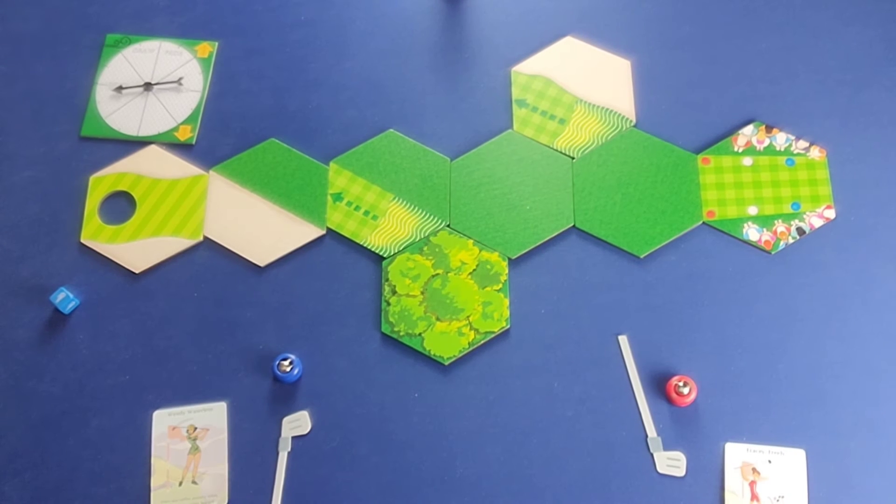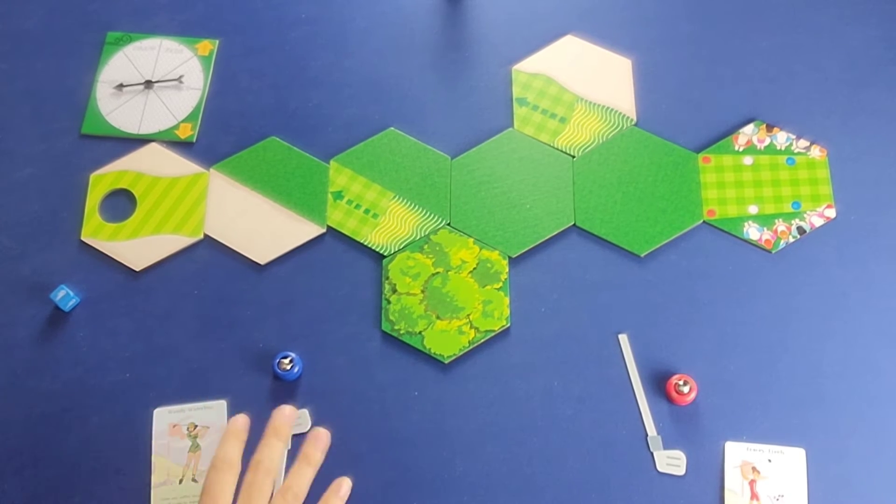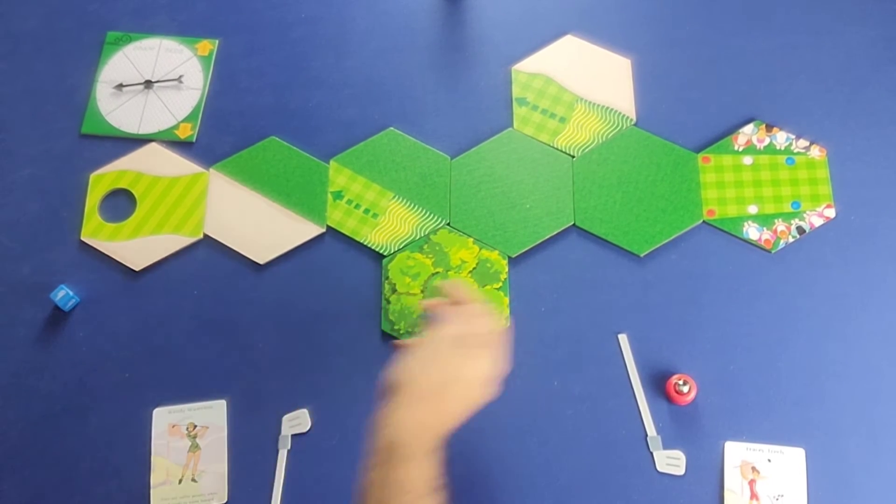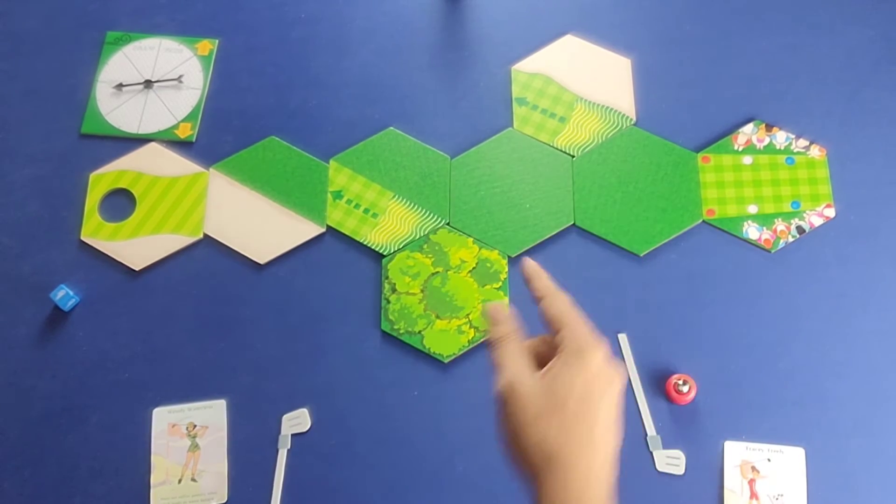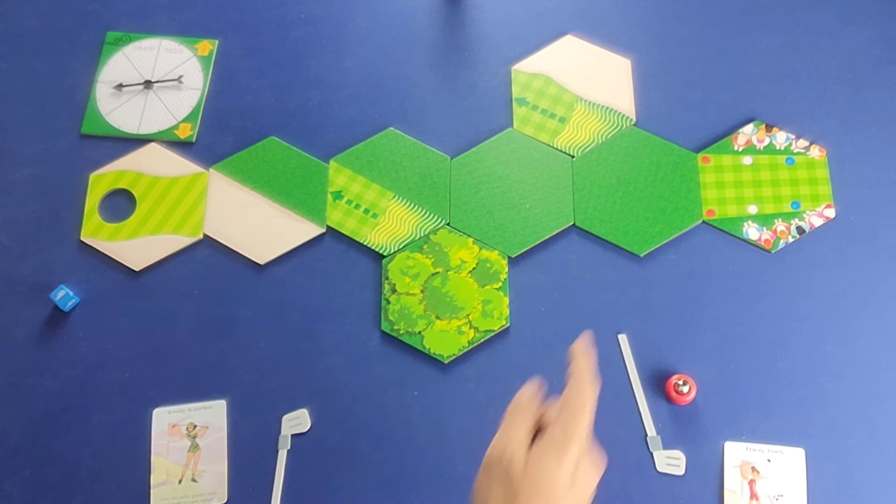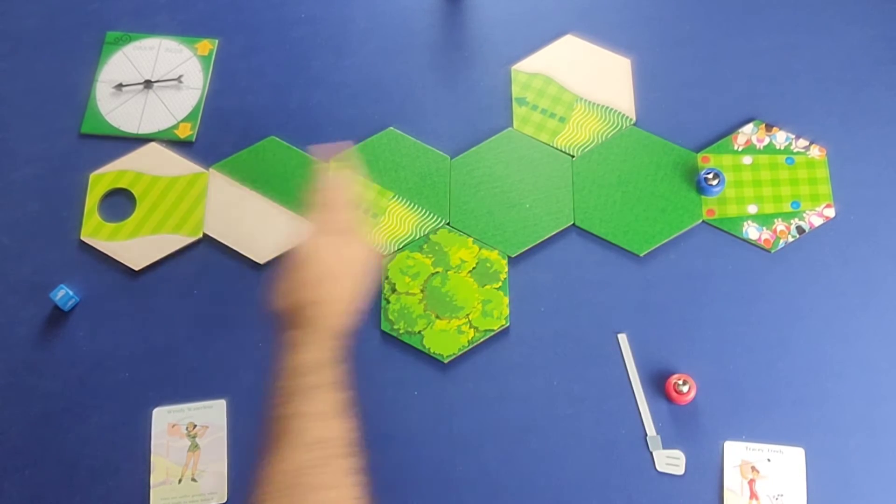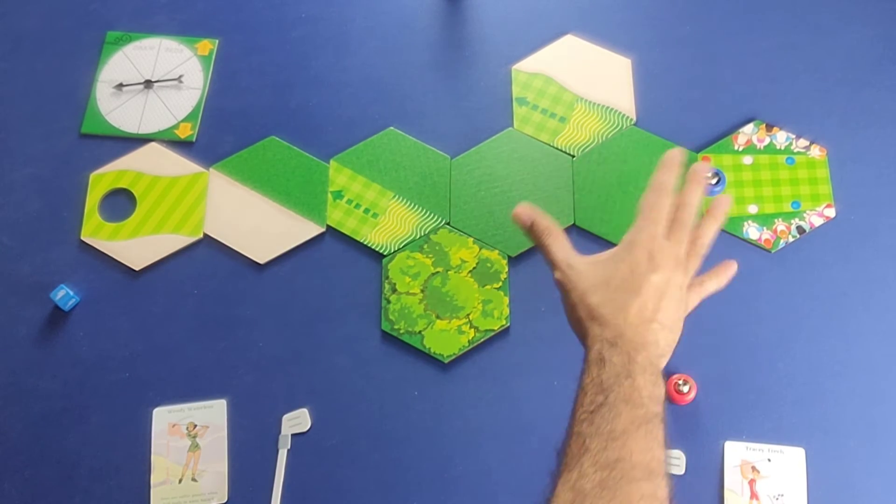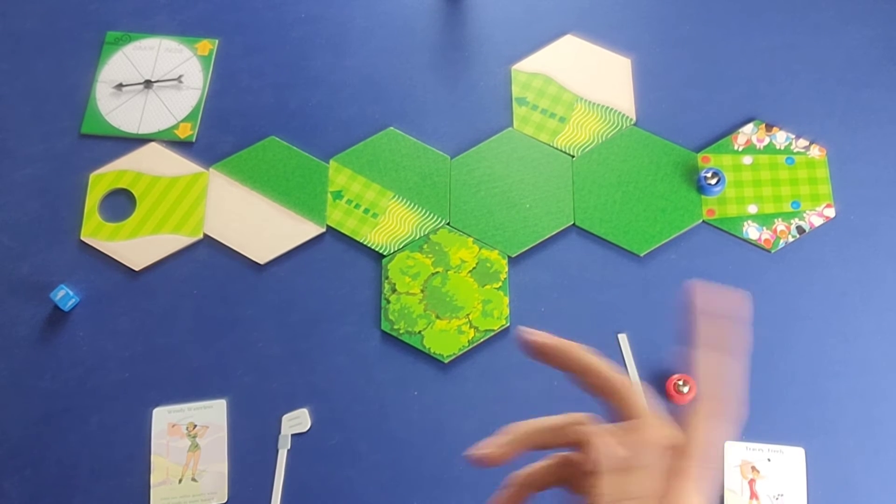So the player here is going to determine that the par for this course is three. So now we're going to simulate a few rounds to give you guys an idea as to how the game plays. We're going to start with this player here on the left, the player who created this hole. They're going to start and they're going to tell you which tee box of the three potential options is going to be the tee box from which all players will start. And they're going to choose the red one right here, which is the closest one to the green, the closest one to the hole. So it's going to be a little bit easier as opposed to the other two options, which are a little bit further back.